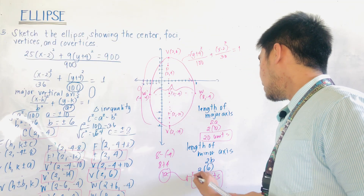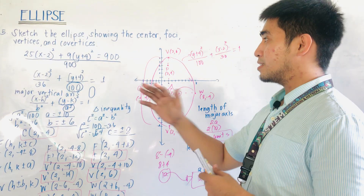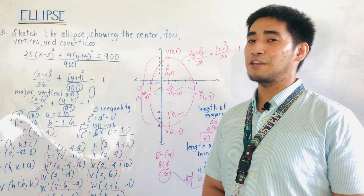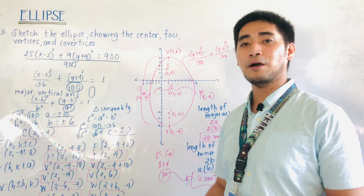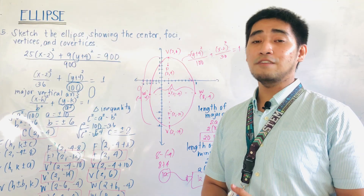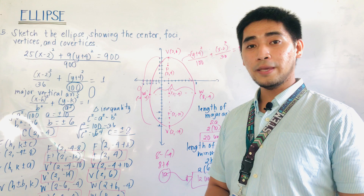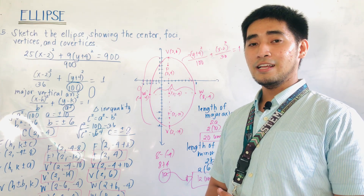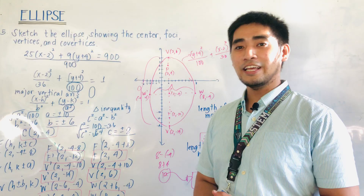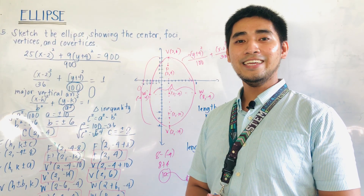That is how we sketch an ellipse, showing the center, the foci, the vertices, and the co-vertices. I hope you have learned something from today's lesson on sketching an ellipse from its equation. If you have questions, feel free to comment or message me on Facebook, Twitter, or Instagram. I am Engineer Jod Edward Hernandez, saying that mathematics is always fun. Goodbye and God bless.